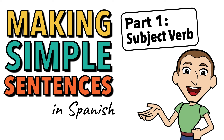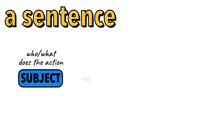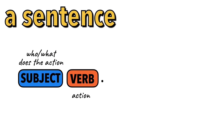Spanish and English work fundamentally the same way when forming sentences, with some exceptions. For a sentence to be a complete sentence, it generally needs a subject and a verb. There might be more to this sentence as it gets more complex, but let's look at some complete sentences with this basic structure.